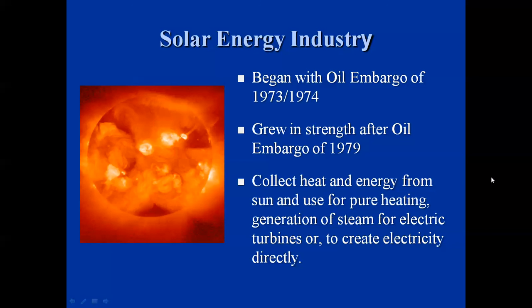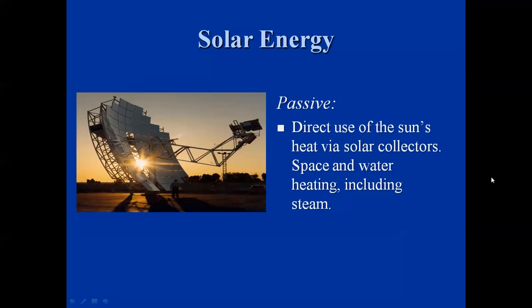Solar energy has been around for quite some time. The real expansion of interest began with the oil embargo of 1973 and 1974, and the second embargo in 1979 caused even more interest. The idea is to collect heat and energy from the sun for pure heating, generation of steam for electric turbines, or to create electricity directly using photovoltaic cells. It's also used to heat water and for space heating. Passive solar energy uses the direct heat of the sun via solar collectors, primarily for space and water heating, and can also create steam. Some panels on buildings may simply be circulating water for hot water heating.